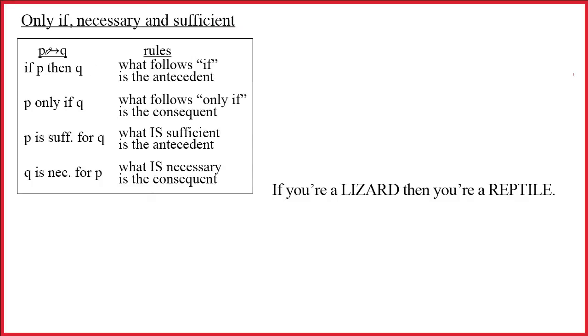It turns out that the relationship that the arrow denotes actually corresponds to a variety of different things in English that we haven't talked about yet. In particular, we now want to introduce the concepts of only if, as well as necessary and sufficient conditions.